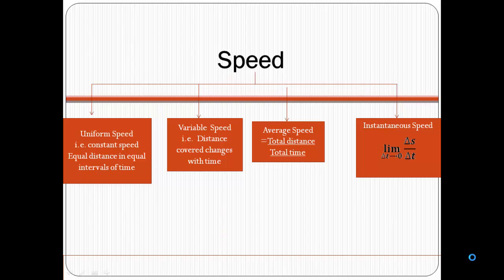There are four types of speed. First, uniform speed, that is constant speed — the object in motion will cover equal distances in equal intervals of time. Second is variable speed, where the distance covered changes with time.